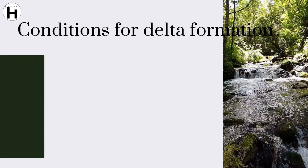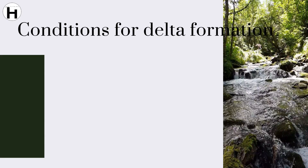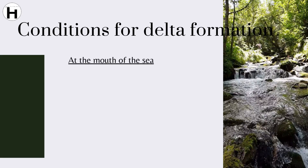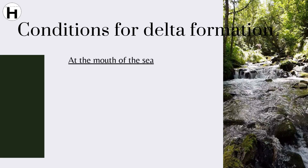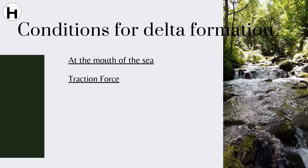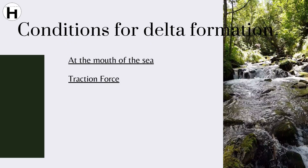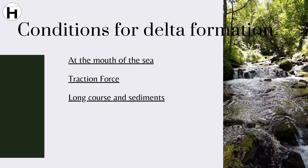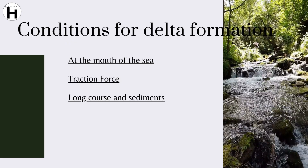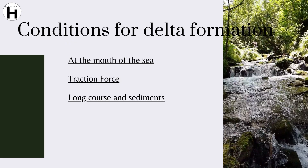What are the conditions for the formation of the delta? A relatively calm or sheltered sea at the mouth is ideal for delta formation. The traction force, i.e. the ability of a river to carry its sediments, should be least. A large amount of sediment supply is crucial for delta formation, so long courses of the river bring sufficient amounts of sediments.